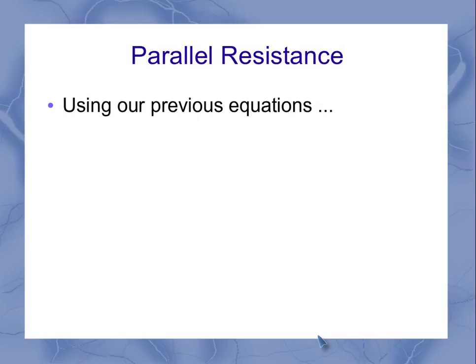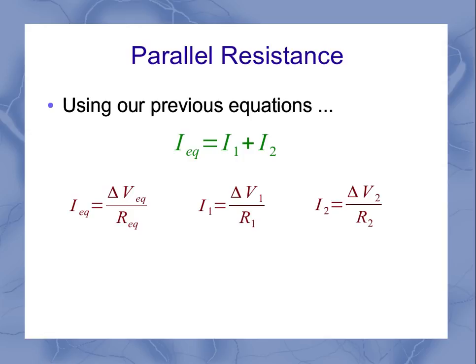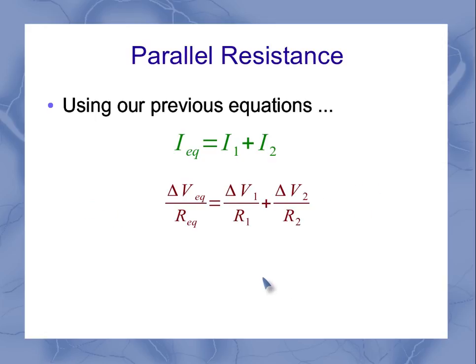So now we get to parallel resistance, and we're going to use these previous equations we've come up with, starting with our current equations where the currents add up. Going back to those original things, I recognize that I can express the current in terms of the voltage and resistance for the equivalent, resistor one, or resistor two. Plugging these three things into my equation, I see that I can express this in terms of the sum of the voltage over the resistance for one and two, giving me the equivalent.